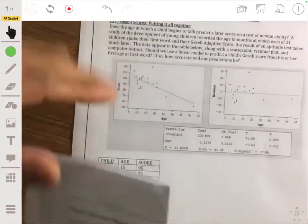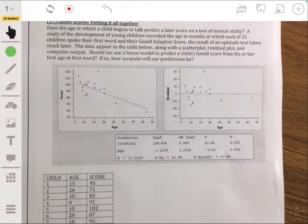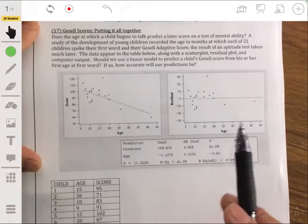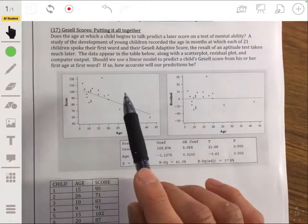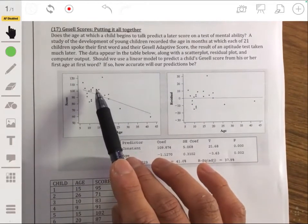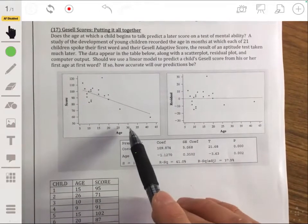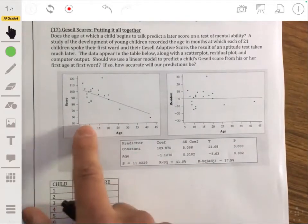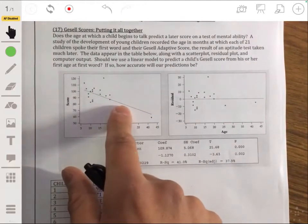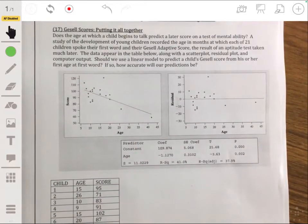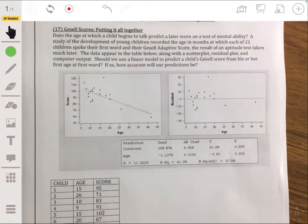We're going to refer back to the problem in my notes that we worked on earlier. So remember, we have this data that has information on the first age that these children spoke versus their score on this test. So score is their response variable, age is the explanatory variable. And it looks like that the later in life that they spoke their first word, the lower that their score tended to be.